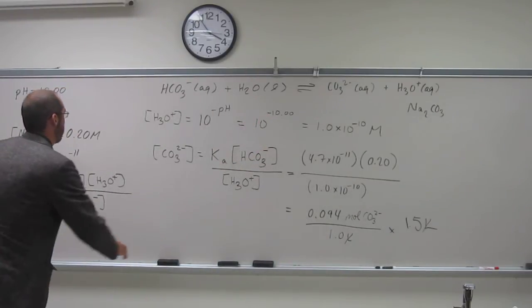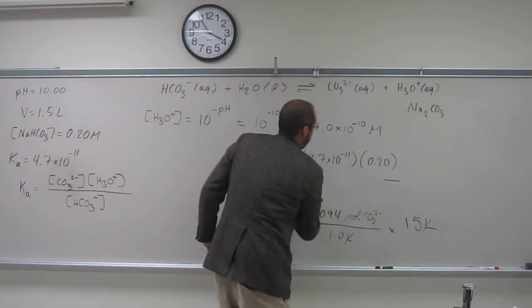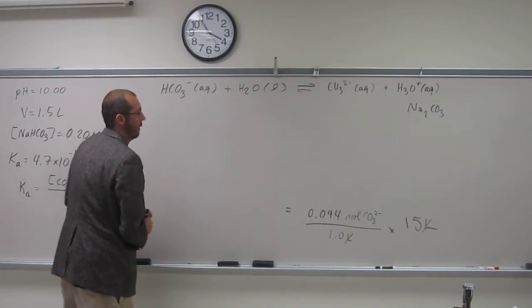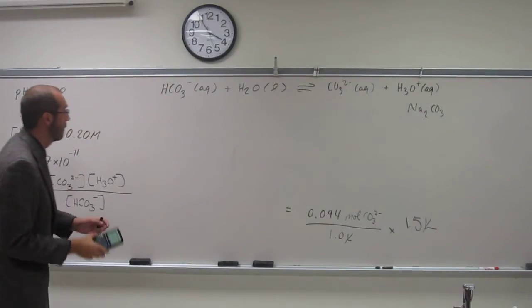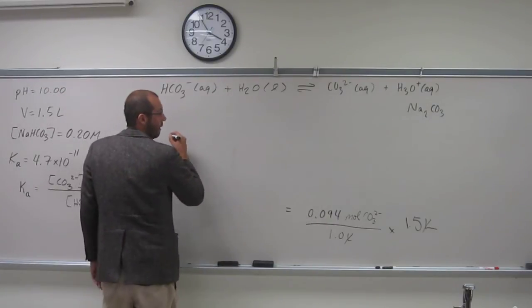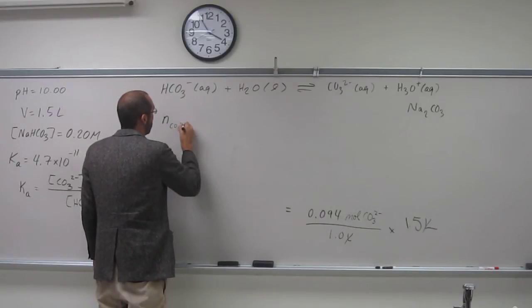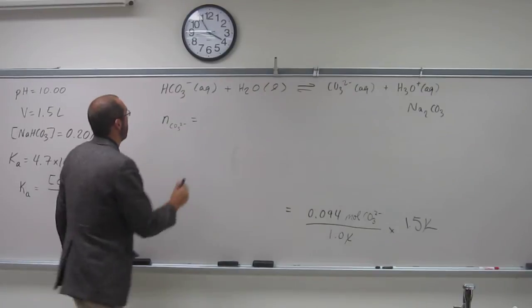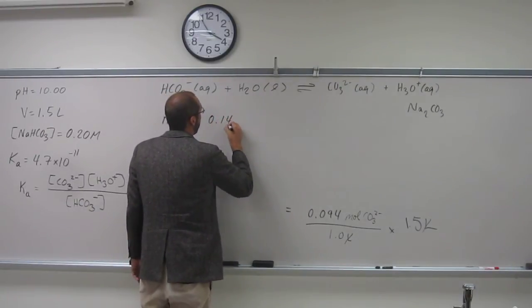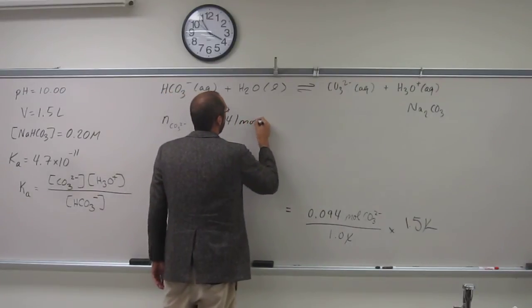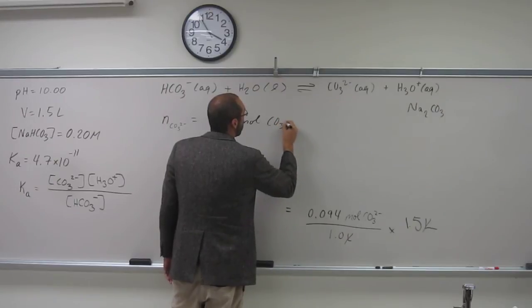So when I do that, I'm going to multiply by 1.5. That would be the number of moles of CO3 2 minus - 0.141 moles of CO3 2 minus.